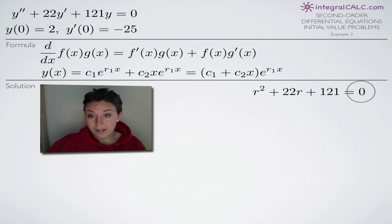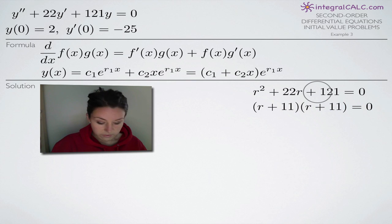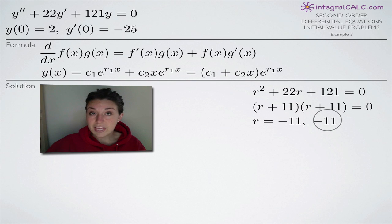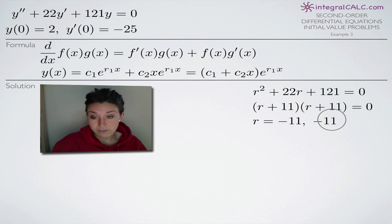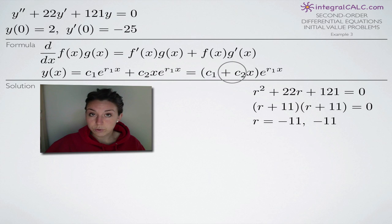We solve this equation for r, and our result will be the roots or solutions. When we factor, we get (r + 11)(r + 11) = 0, which means we have two solutions, both of which are negative 11. That means we have equal real roots — both real numbers, equal to one another. Sometimes you have distinct real roots where two real numbers are different from each other, in which case you use a different formula. When we have complex conjugate roots, which we'll talk about in the next example, we use yet another formula.